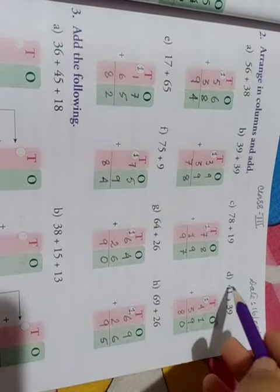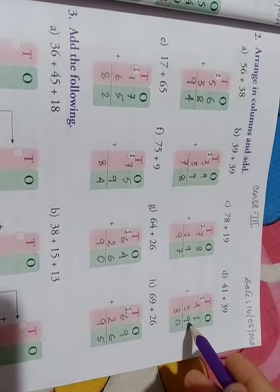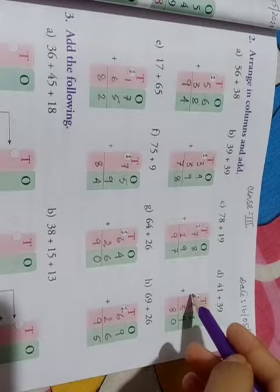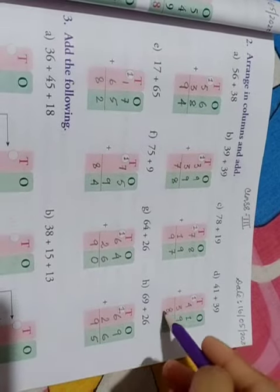49 plus 39. 9 plus 9 is 18, write 8 and 1 is carried over. 4 plus 1 is 5, 5 plus 3 is 8.